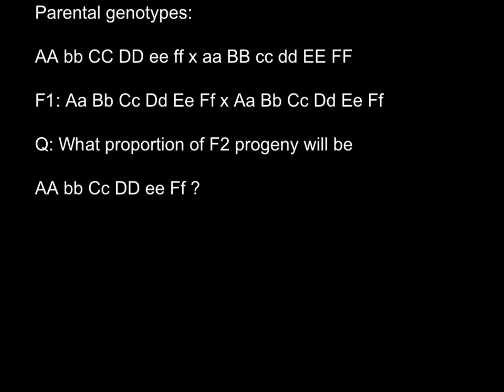So what we have here: we have two parents that we start with. This is parent 1 and this is parent 2, and when we cross these two parents we are going to get F1 generation. F1 generation we are going to self-pollinate, and now the question itself: what is the proportion of the F2 progeny that would be of this particular genotype?